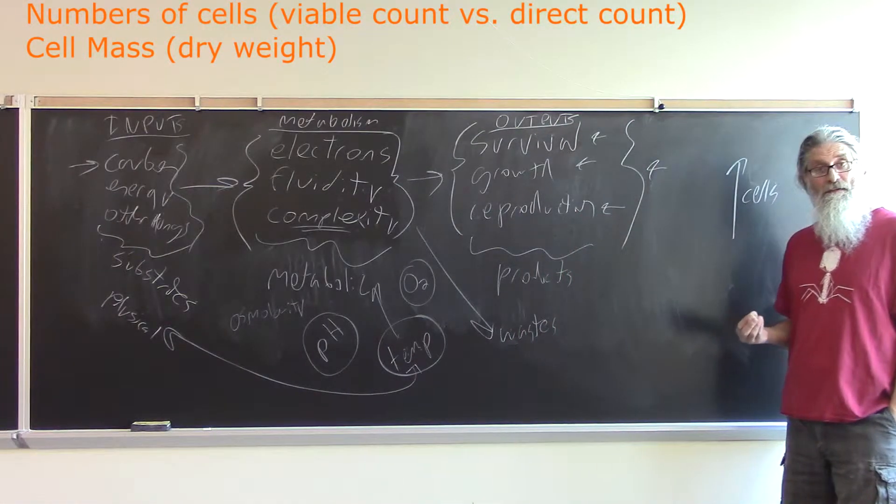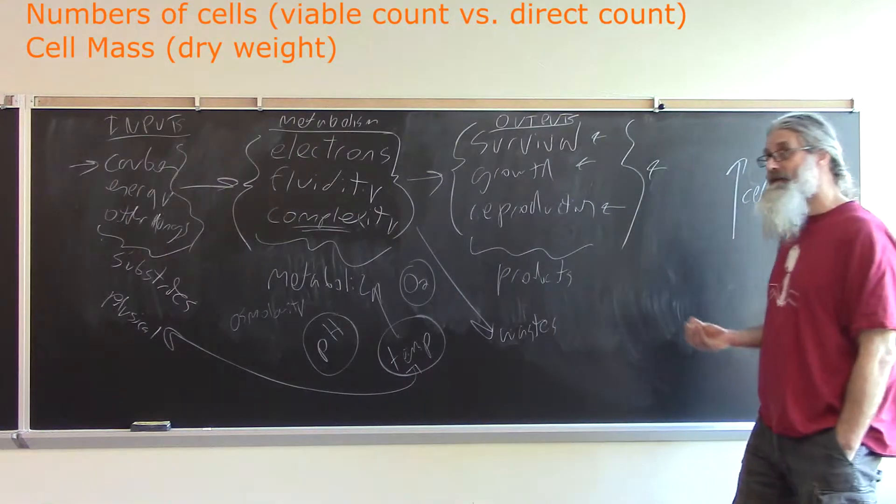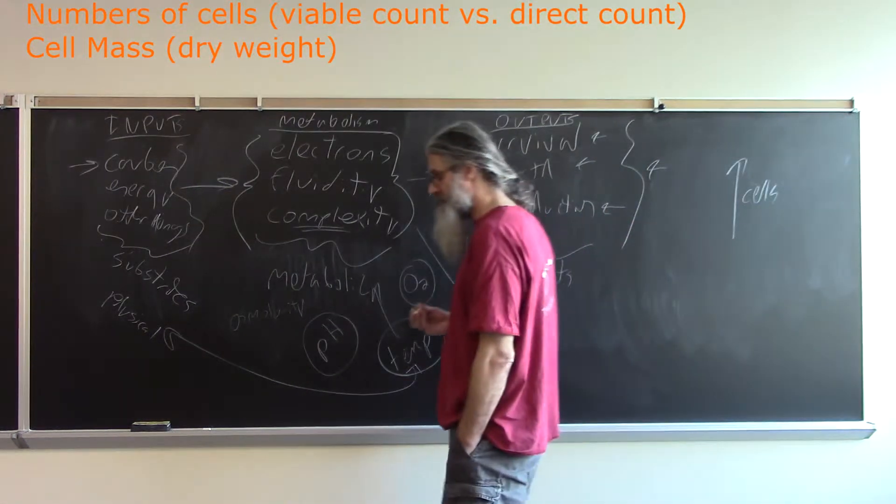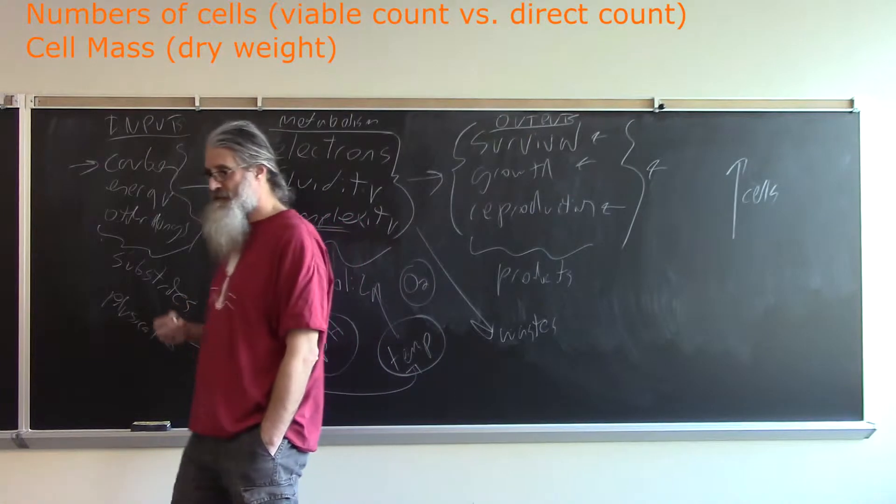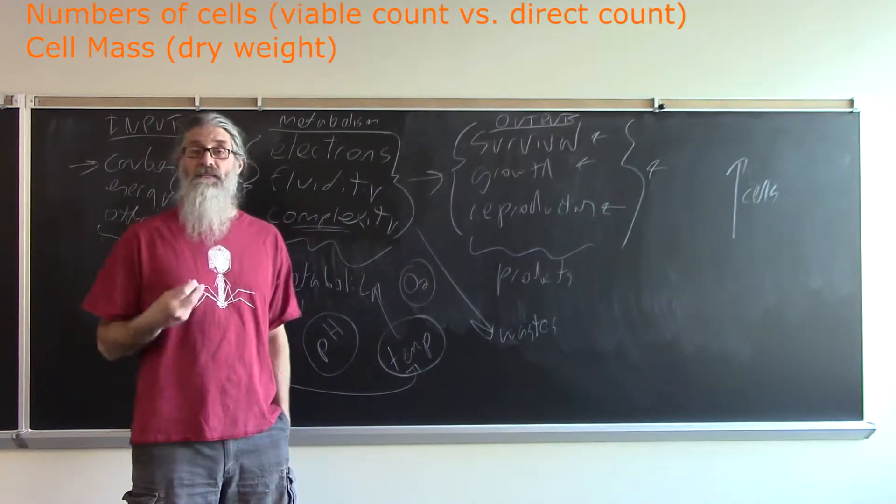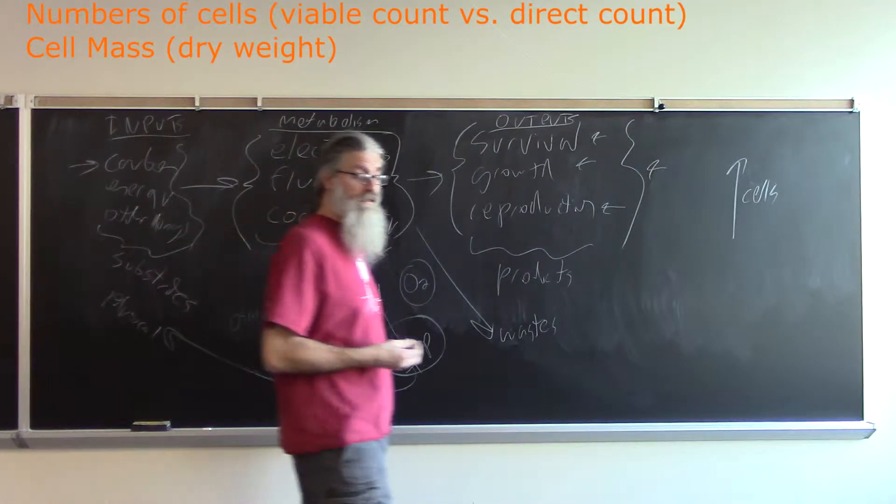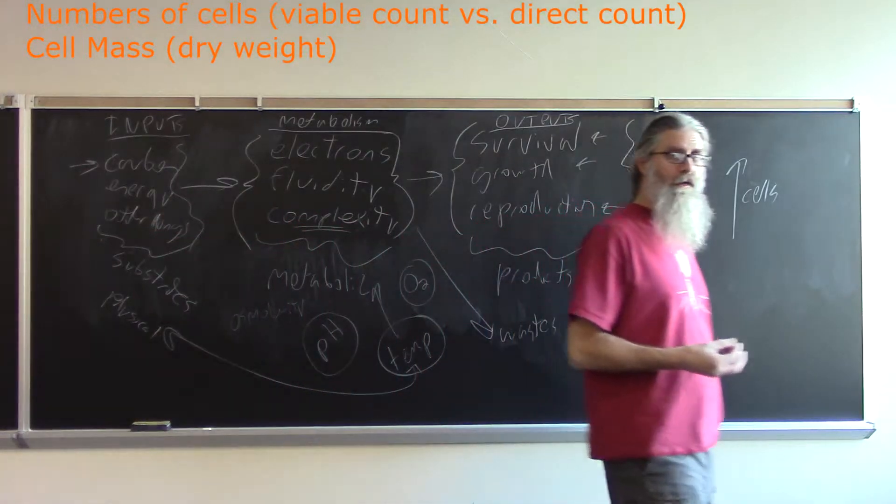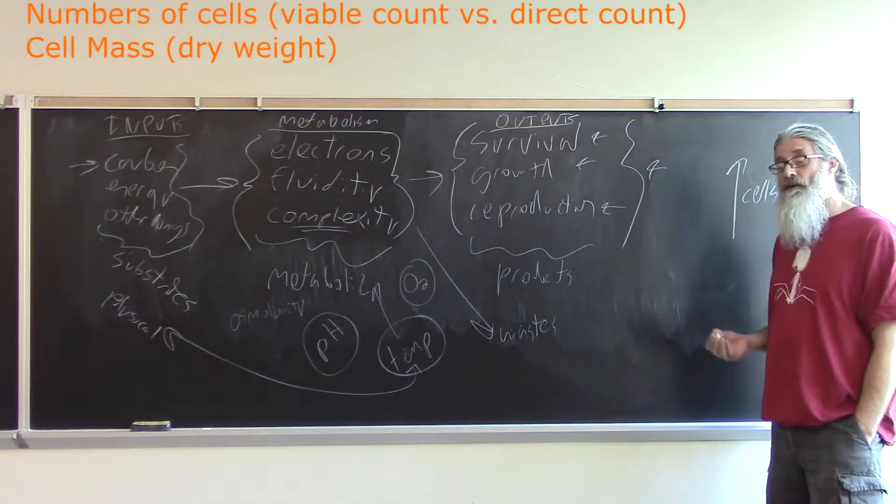This involves removing the cells from the liquid that they're in, and then drying out the cells and actually measuring those cells—this is called dry weight.